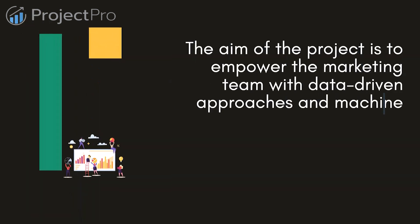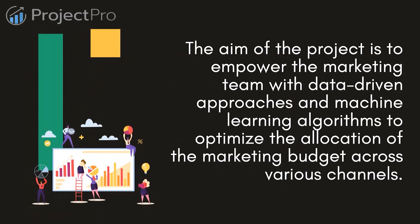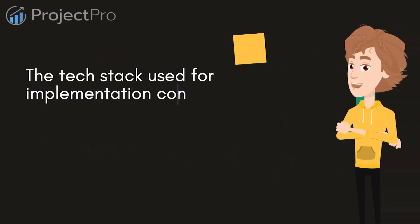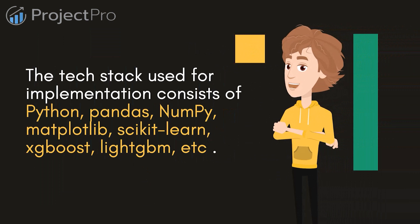The aim of the project is to empower the marketing team with data-driven approaches and machine learning algorithms to optimize the allocation of the marketing budget across various channels. The tech stack used for implementation consists of Python, Pandas, NumPy, Matplotlib, Scikit-learn, XGBoost, LightGBM, and others.